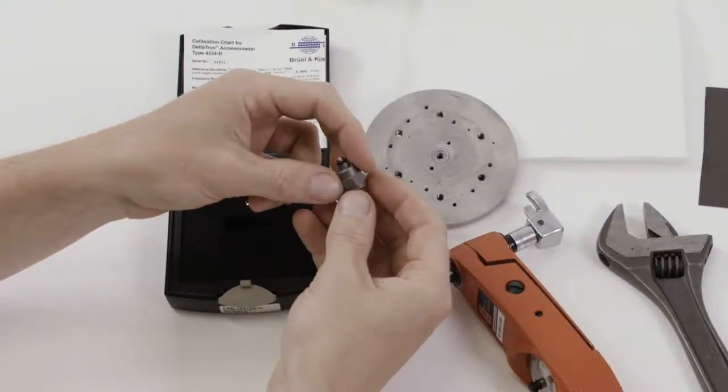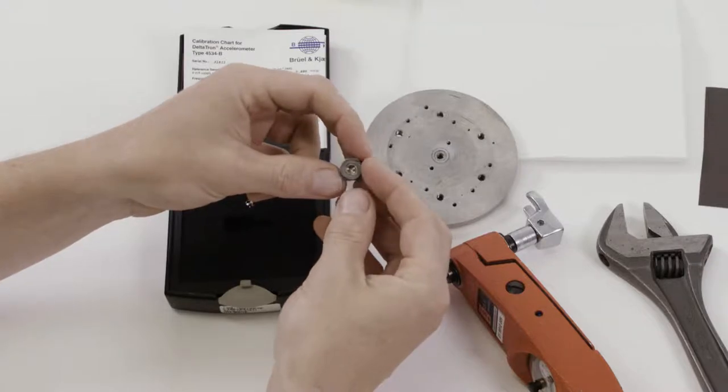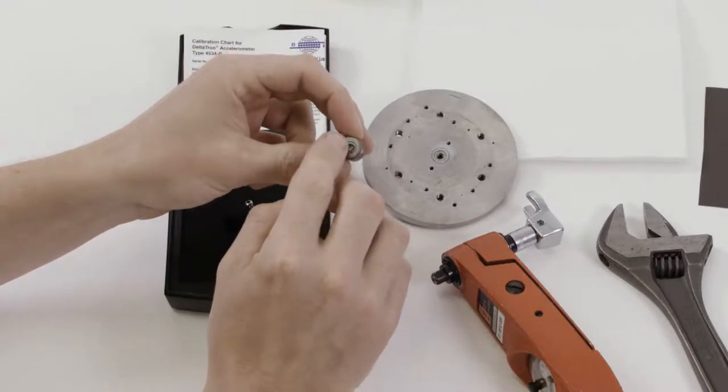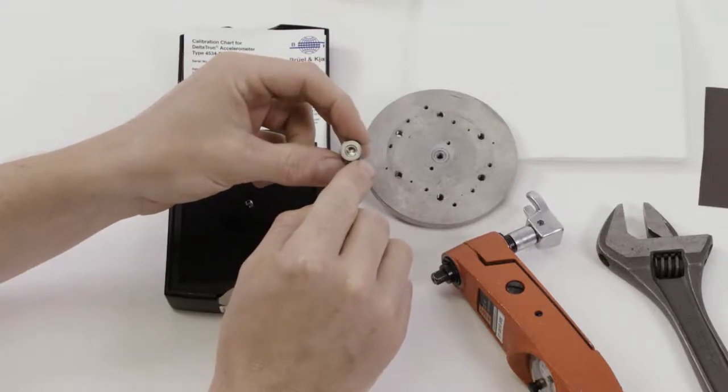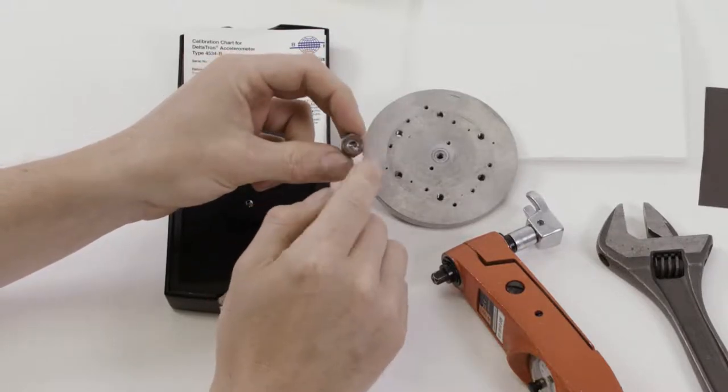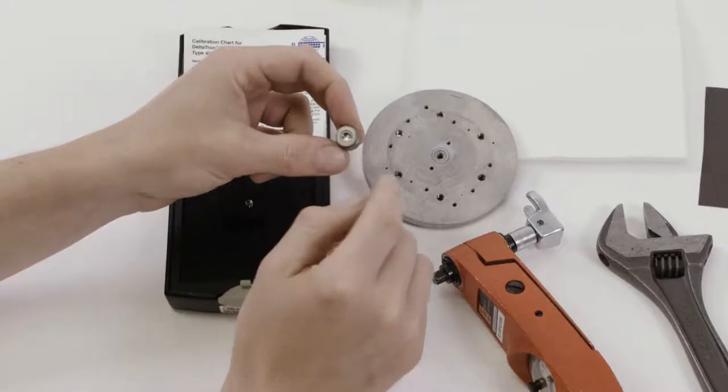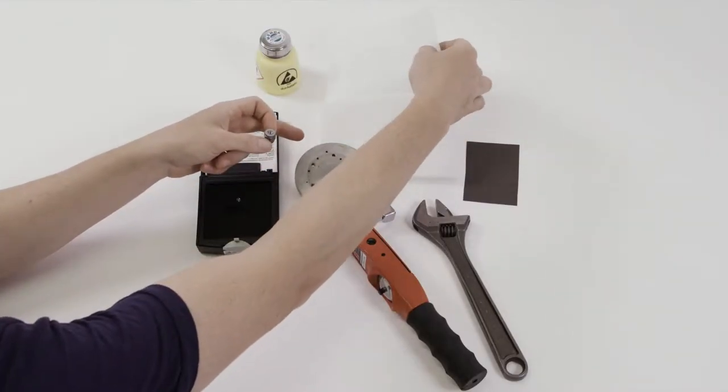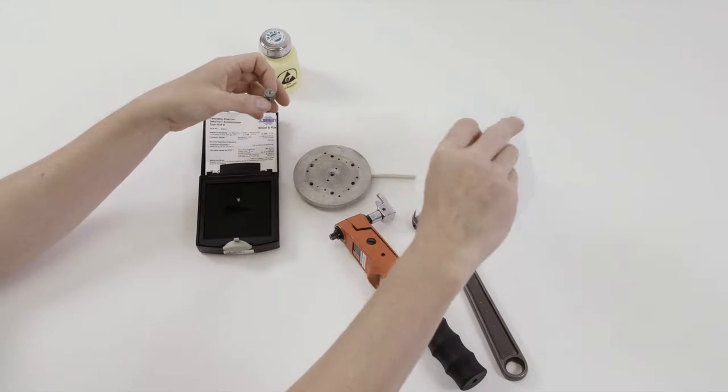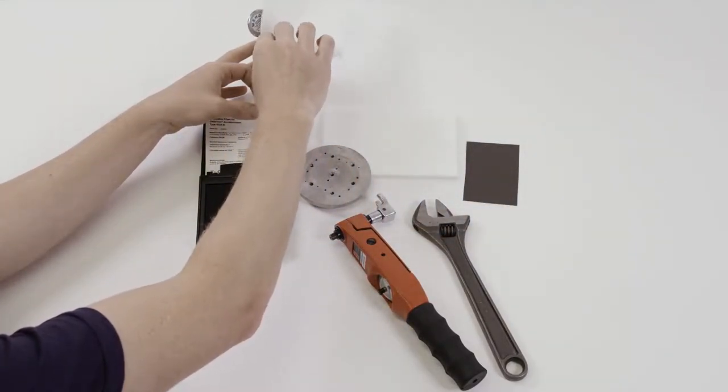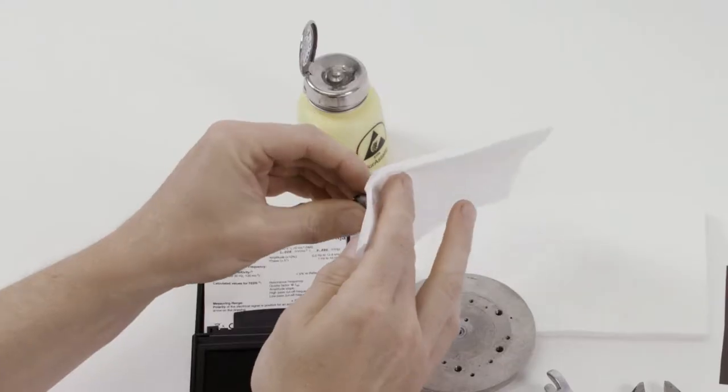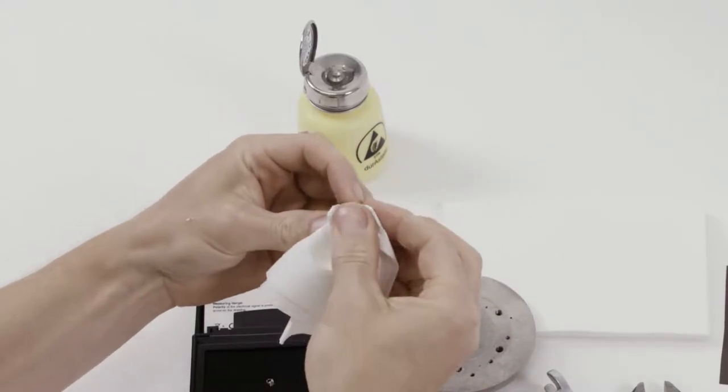Before mounting an accelerometer, always check and inspect the mounting surface for cleanliness and damage. If residues, for example of grease from prior mounting is present, use a cloth or tissue wetted with alcohol to simply clean off the surface.